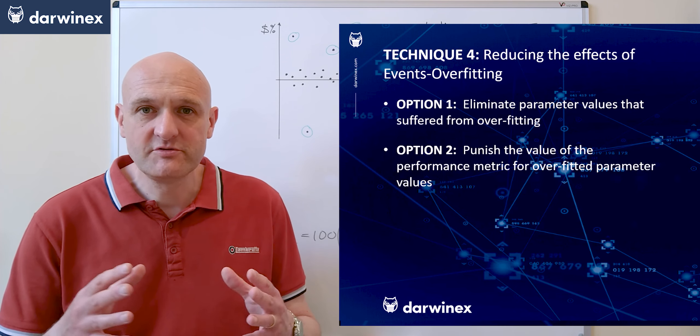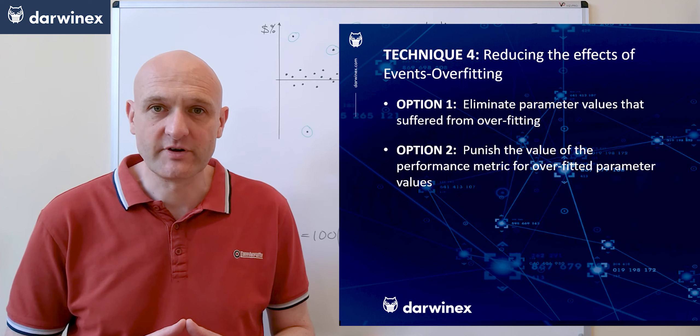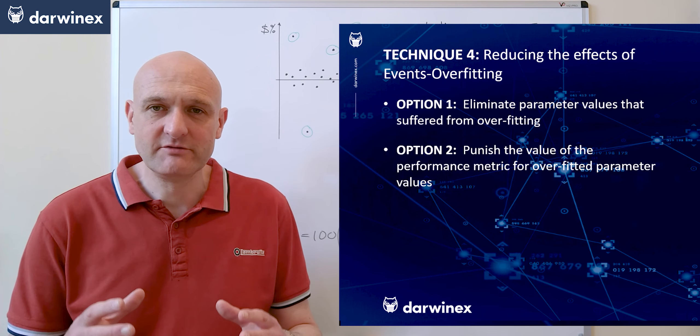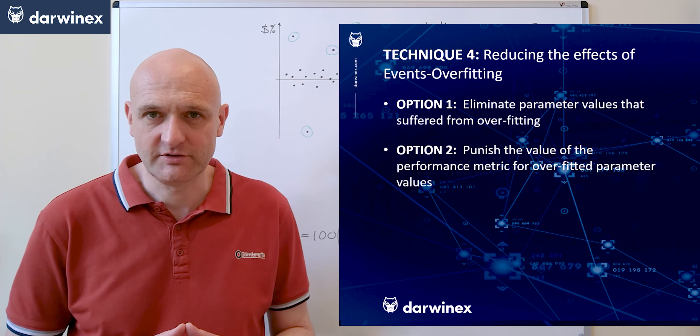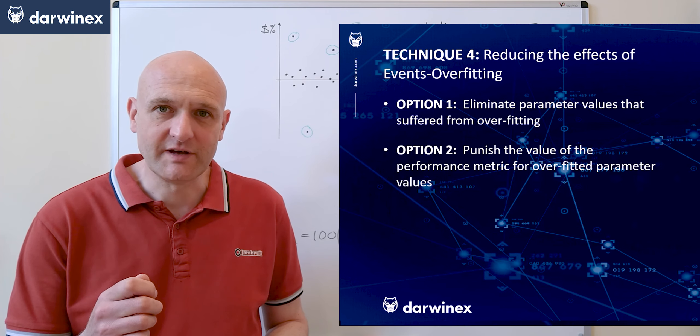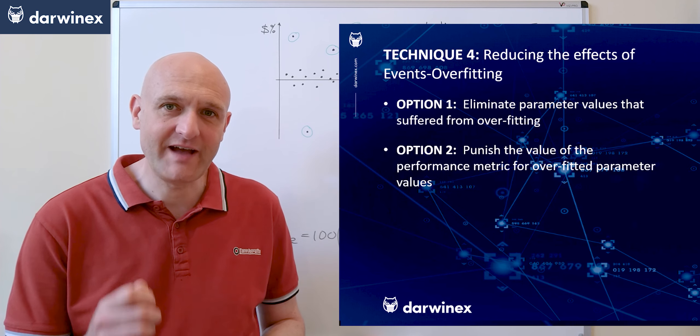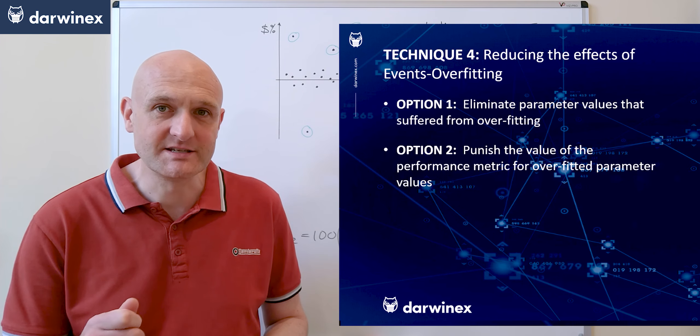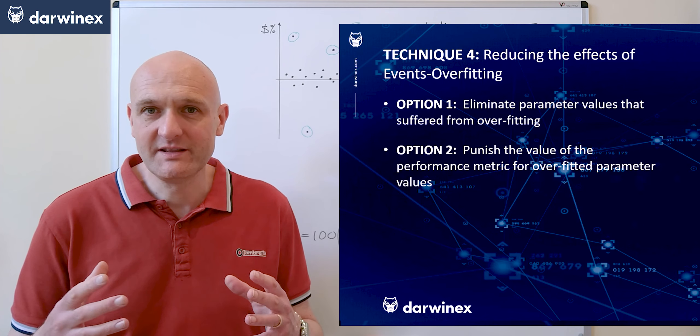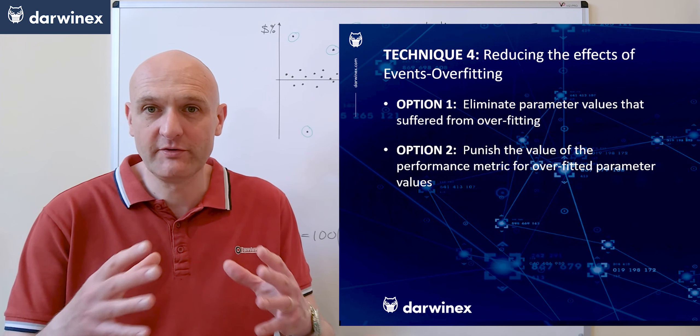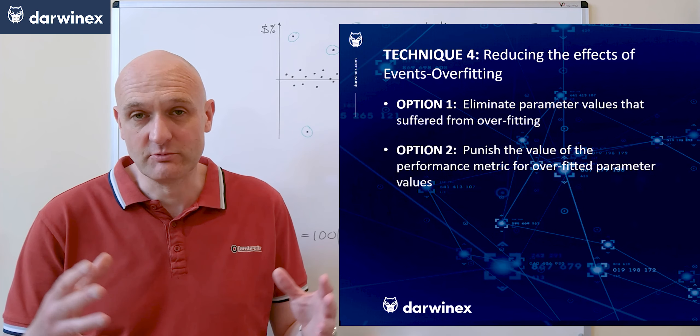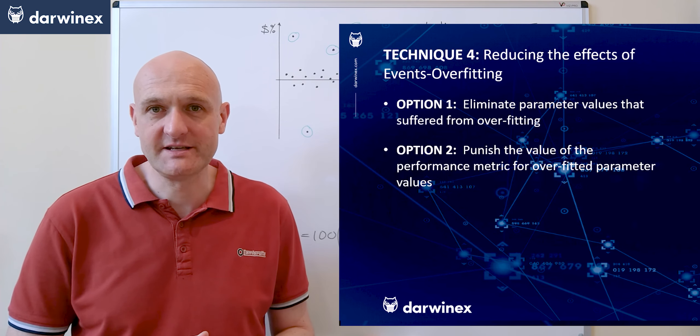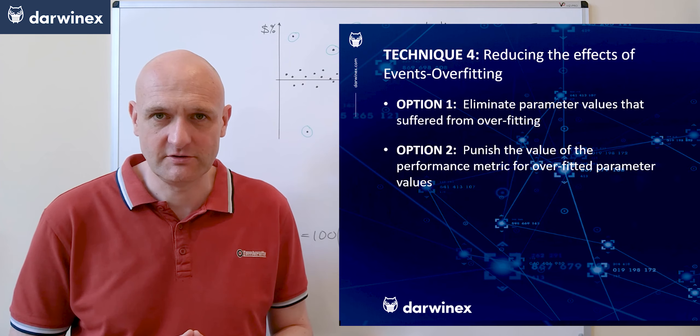Well the same routine would iterate through each of the trades and calculate the overfitting score, but this time instead of simply returning 0 from the function you'd punish those parameter values that were adversely affected by the overfitting so that they don't get chosen as easily. And a simple way of doing this is simply to divide the raw performance metric, so we said we would be using profit factor, and dividing that by the overfitting score or some function of the overfitting score.